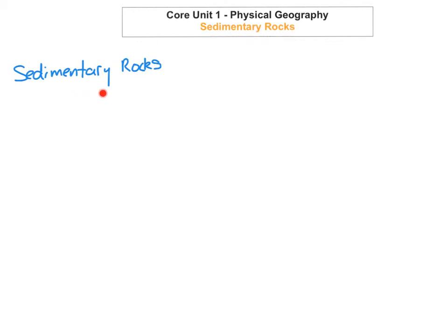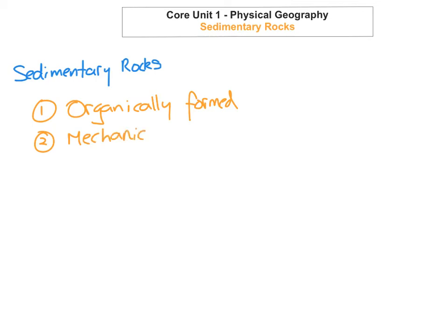Now that we understand how sedimentary rocks are formed, we're going to look at how we actually group them. Sedimentary rocks are grouped according to their origin — how they're actually formed. There are three different ways they can be formed: the first is organically formed, the second is mechanically formed, and the third is chemically formed.